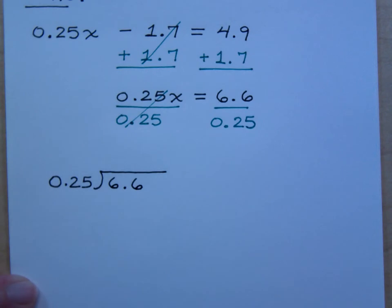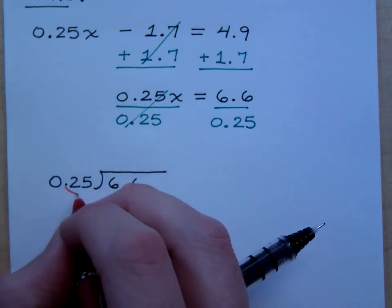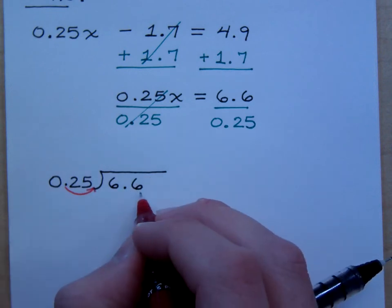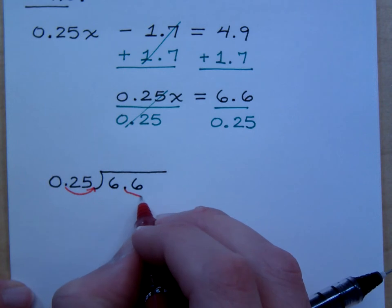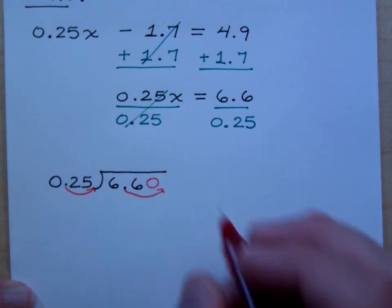But remember, we don't want to divide by the decimal. We want to convert this and make it a whole number. How do I do that? Move the decimal over here so that moves it two spaces, right? How do I take care of that on the inside? Move it not once, but twice. And when I do that, I've got to put in this 0. And my decimal goes straight up top like that.